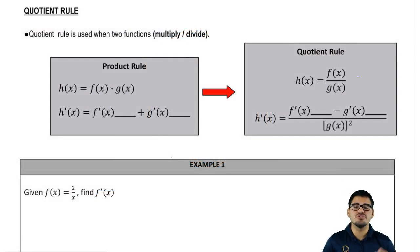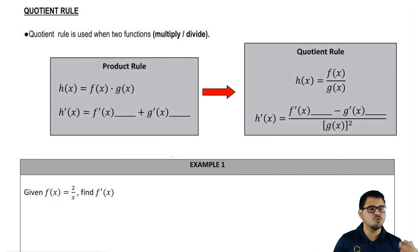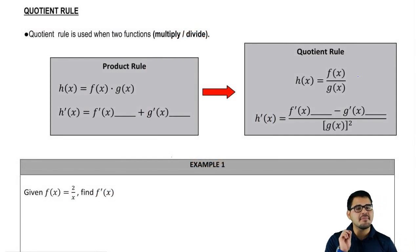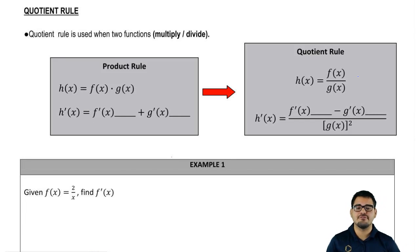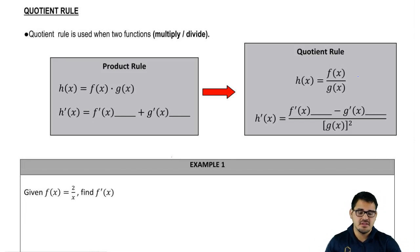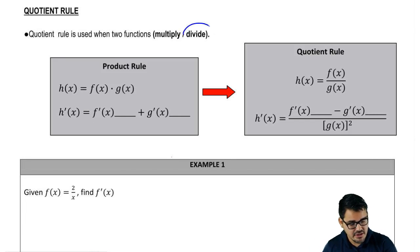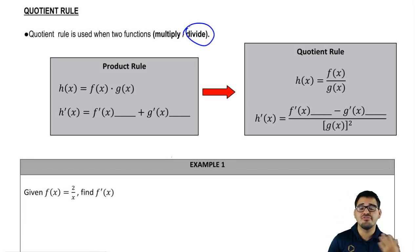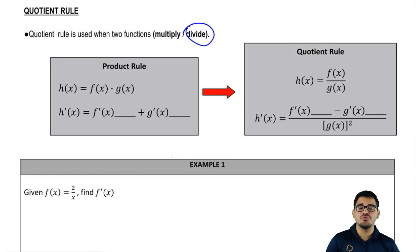The quotient rule is used when two functions divide. Let's think back about the word quotient — quotient is when you have two factors in math dividing. So whenever we have two factors dividing, we're going to go ahead and use the quotient rule.